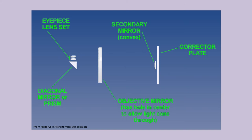The Schmidt-Cassegrain is defined by the relatively thin Schmidt corrector plate at the front of the telescope. This plate does three things. One, it directs light coming into the scope to fall on the mirror in such a way that it will come to a spherical aberration-free focus. Two, it holds the convex secondary mirror in a diffraction-spike-free way. And three, it seals the telescope closed. The primary mirror has a spherical shape and a hole right in the center for light from the secondary to pass through. A tube runs through this hole, and the telescope is focused by moving the primary back and forth along the optical axis.